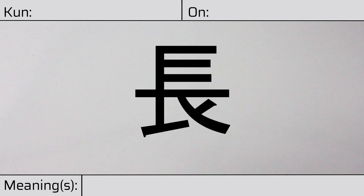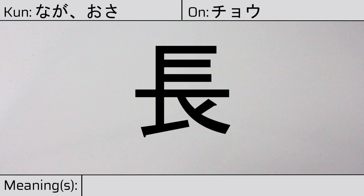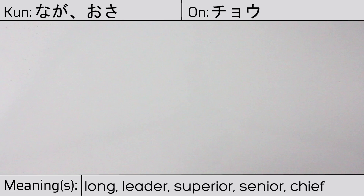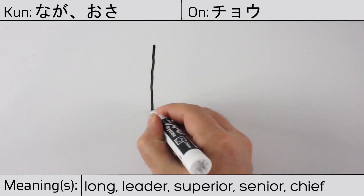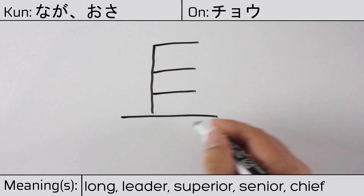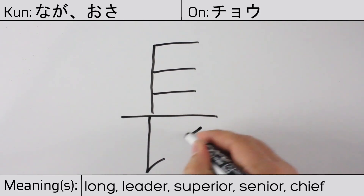Welcome to this lesson on Japanese kanji. Today, we'll be discussing this character. This kanji has kunyomi or Japanese readings of naga or osa, and it has onyomi or Chinese reading of chou. This character has the meanings long, leader, superior, senior, or chief. Here is the stroke order.